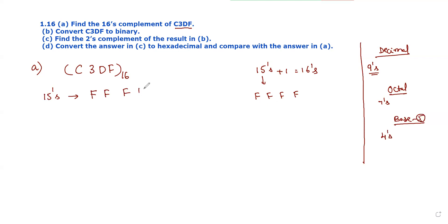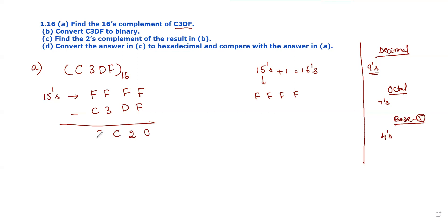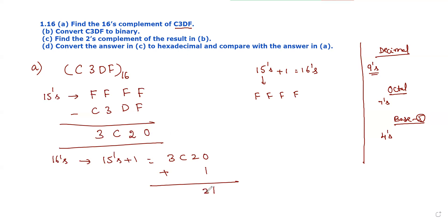Total 4 digits, so use 4 F's. C 3 D F subtract: F minus F is 0, F minus D is 2, F minus 3 is C — because 15 minus 3 is 12, and C equivalent value is 12 — F minus C: 15 minus 12 is 3. So 15's complement is 3C20. Then 16's complement equals 15's complement plus 1, so 3C20 plus 1 equals 3C21. This is our 16's complement value.